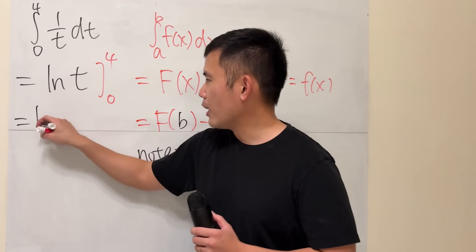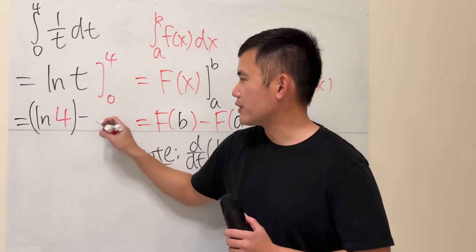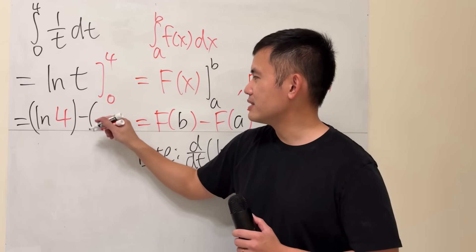So it looks like we have ln 4, and that is okay, that's the first part, but when we plug in 0...